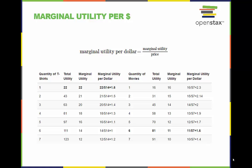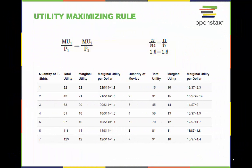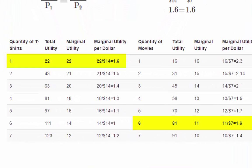Jose is looking at maximizing his utility based on his budget constraint. We can calculate the marginal utility per dollar by dividing the marginal utility by the price. Now that Jose is able to compare t-shirts to movies based on the marginal utility per dollar, he can apply the utility maximization rule: utility is at its greatest if we consume at the combination where the marginal utilities per dollar of each product are equal. In our example, at point S on the budget constraint curve, the marginal utility per dollar for both t-shirts and movies is equal at 1.6.